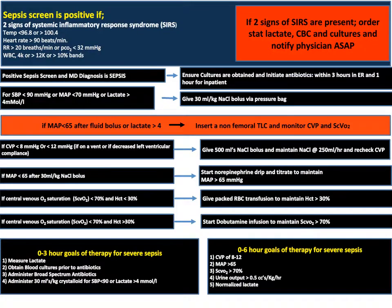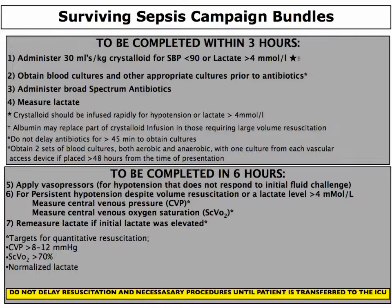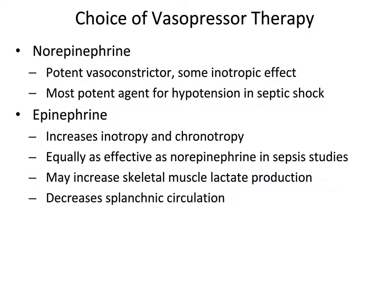If the SIRS screen is positive, we order a stat lactate, CBC, and cultures. The physician identifies the patient as potentially septic, administration of broad-spectrum antibiotics and fluids are initiated in our 0-3-hour goal-directed therapy. The patient is then admitted to the hospital and the 0-6-hour goals of therapy for severe sepsis are initiated to maintain CVP between 8-12, maintain MAP, maintain urine output, and normalize lactate. Most importantly, broad-spectrum antibiotics must be administered within three hours, and in the second six hours, the focus is maintaining or improving oxygenation and central venous pressure. After fluid resuscitation, if the patient is continually under-perfused, vasoconstrictor therapy is necessary — norepinephrine is the vasoconstrictor of choice.